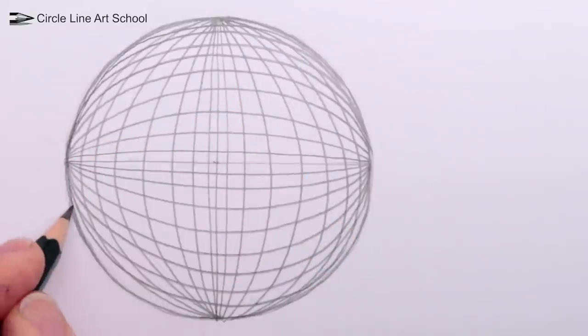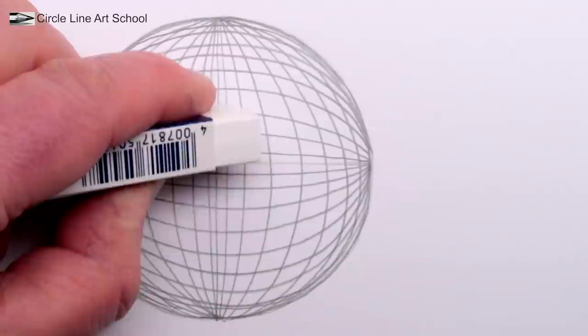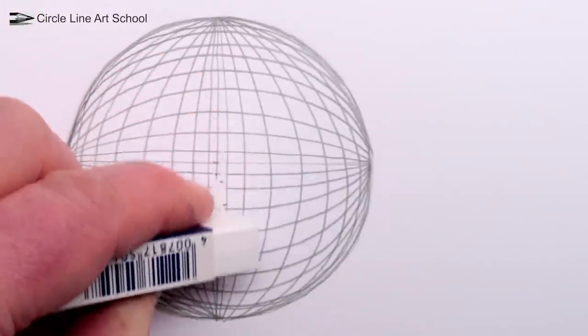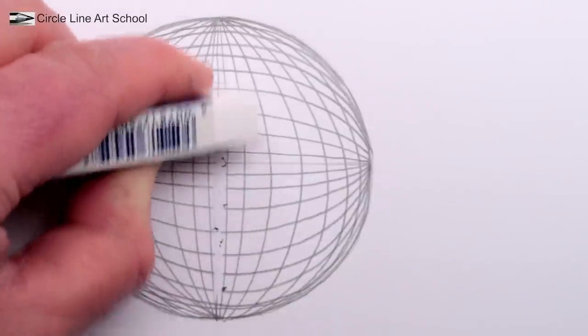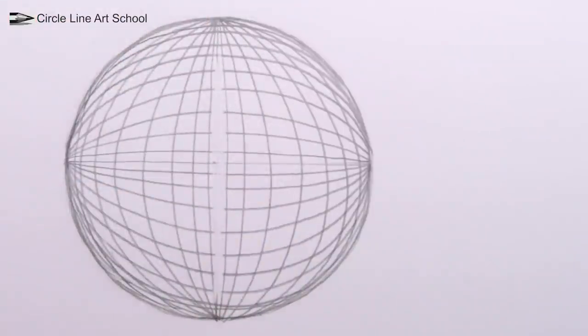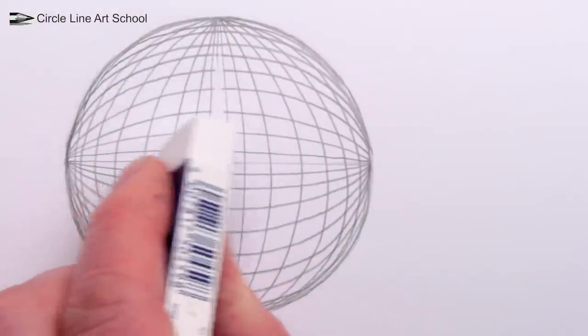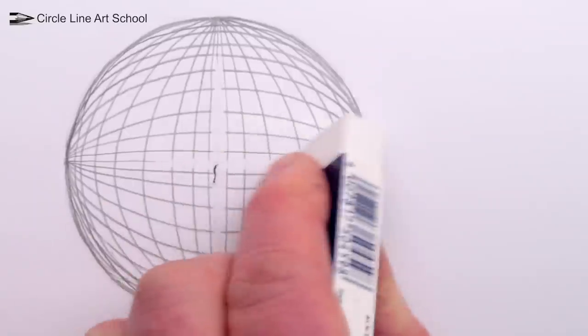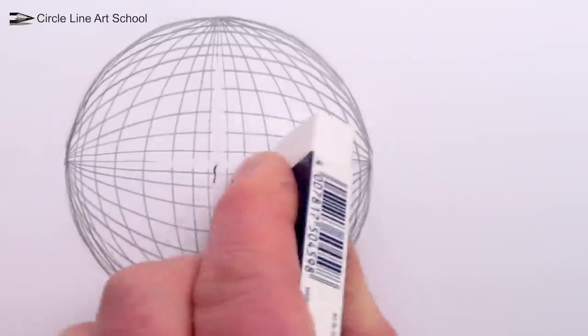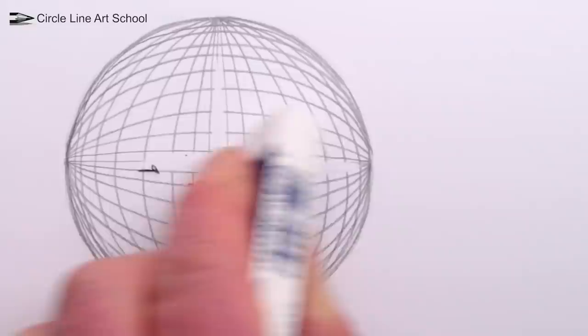Next we need to erase the original cross and some bits of the grid lines next to the cross. This is because this cross will become the middle of our four roads going towards our four vanishing points on the edge of the circle.